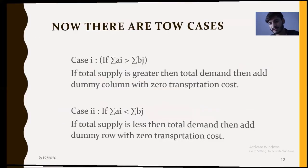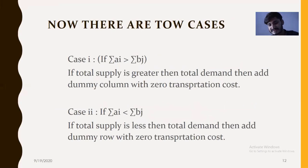There are two cases for unbalanced problems. Case one: if total supply is greater than total demand, then add a dummy column with zero transportation cost.